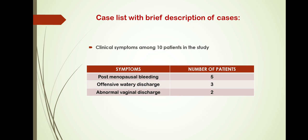These are the symptoms presented in the 10 patients in my study. They are post-menopausal bleeding, seen in 5 patients; offensive watery discharge, seen in 3 patients; and abnormal vaginal discharge, seen in 2 patients.